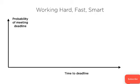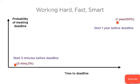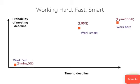Let's plot working hard, fast, and smart on a coordinate axis. You have time to deadline on the X axis and the probability of meeting your deadline on the Y axis. At the bottom left is when you start five minutes before the deadline — that's a 0% probability of hitting the deadline. At the top right, you start one year before the deadline and the probability is 100%. Somewhere in the middle is work smart, where you have a 95% probability of hitting your deadline.